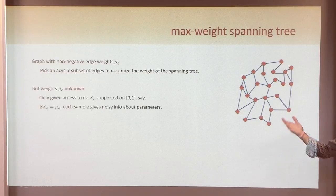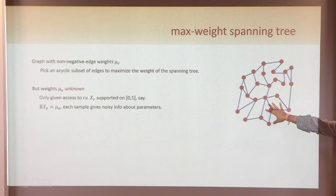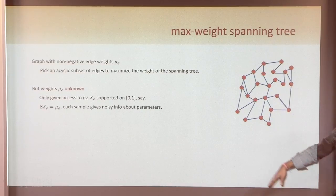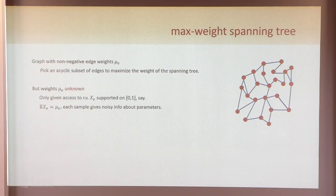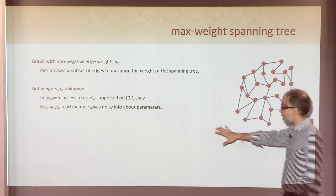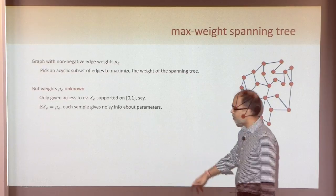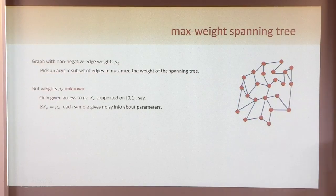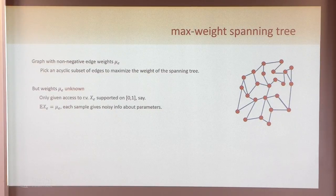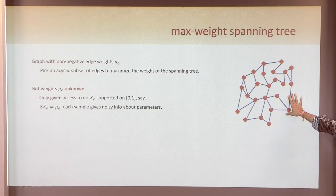But now the problem is that I don't know the weights. The weights are unknown to me and I have to learn them. My model: I'm given access to a random variable — for every edge, I'm given an unbiased estimator. The weights are supported over the interval [0,1]. I can take a bunch of samples, and at the end of the process, I want to output the max weight spanning tree with high probability.